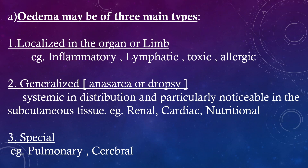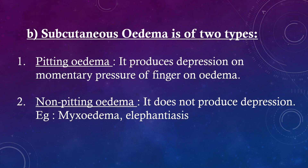Third, special edema — examples include pulmonary and cerebral edema. Subcutaneous edema is of two types: pitting edema and non-pitting edema.